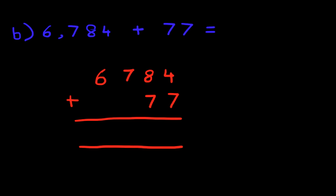We have 6,784 plus 77. Note how I've written this down. It has to be one number below the other number. We've rewritten this. We're not going to label the columns. We're going to go ahead simply with the addition. Firstly, we're going to add 4 and 7. So what is 4 plus 7?